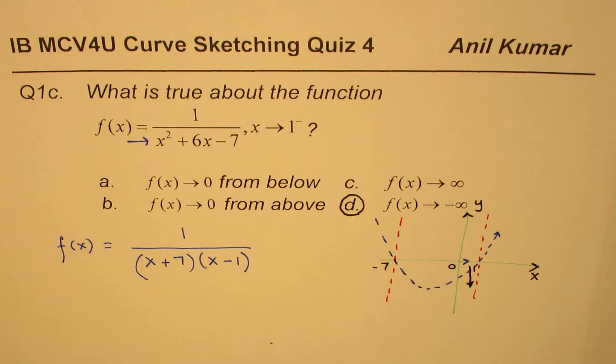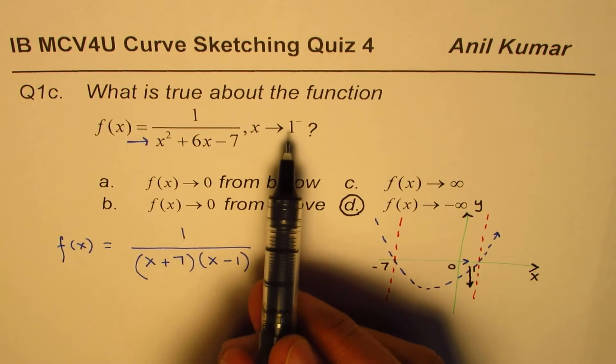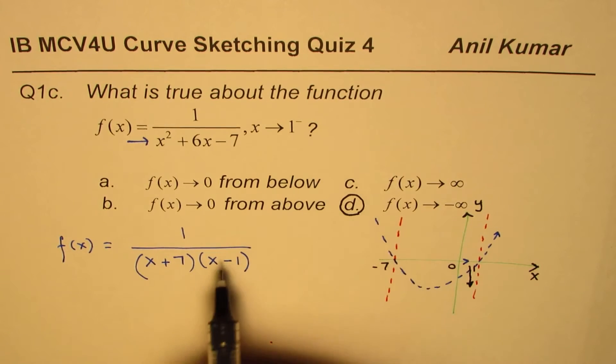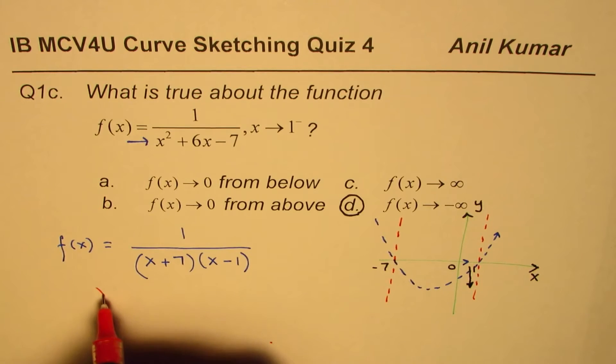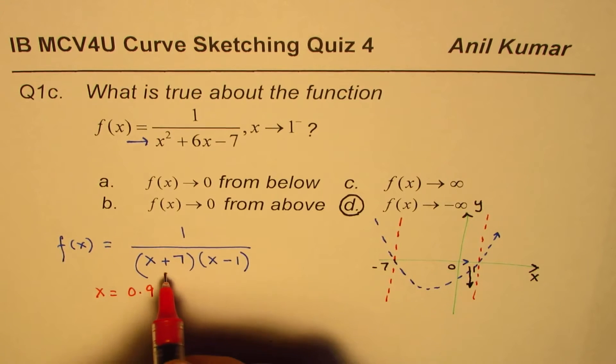So, this is graphical representation or the answer. The other way is you can actually calculate the value by substituting something which is less than 1, slightly less than 1. So, if I do that, if I have, let's say, x equals 0.9. In that case, this part is going to be positive.